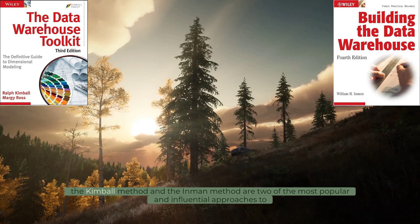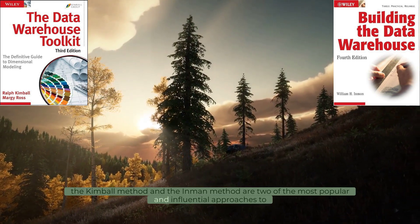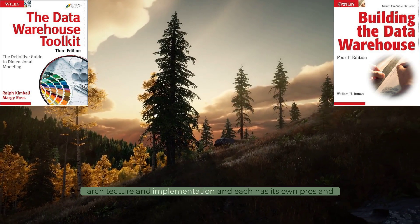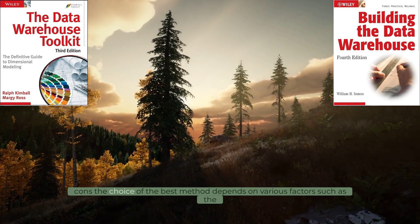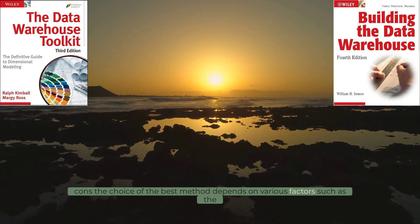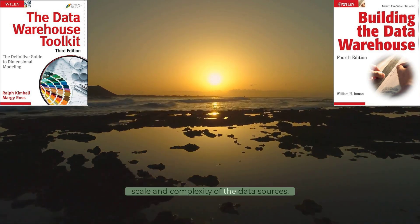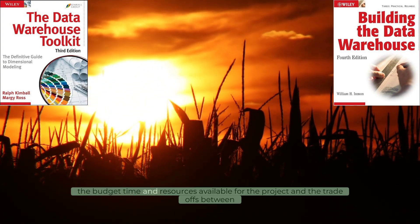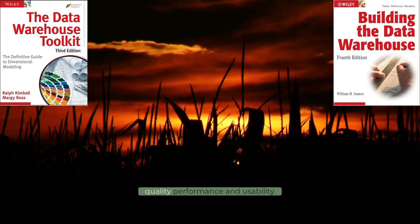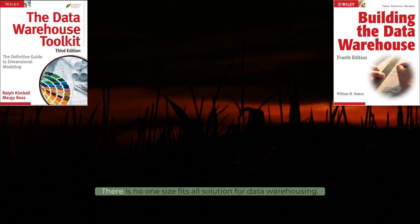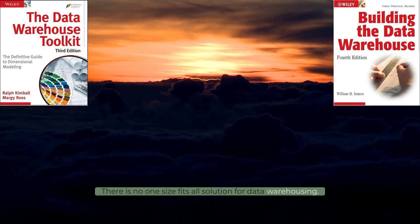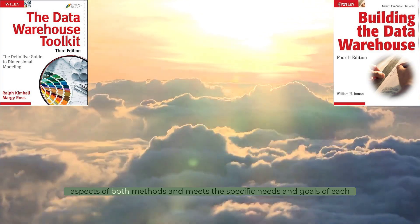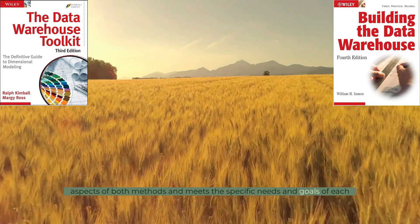The Kimball method and the Inman method are two of the most popular and influential approaches to data warehousing. They differ in their philosophy, architecture, and implementation, and each has its own pros and cons. The choice of the best method depends on various factors, such as the scope, scale, and complexity of the data sources; the requirements, expectations, and preferences of the end users; the budget, time, and resources available for the project; and the trade-offs between quality, performance, and usability. There is no one-size-fits-all solution for data warehousing, and the best practice is to adopt a hybrid or customized approach that combines the best aspects of both methods and meets the specific needs and goals of each organization.